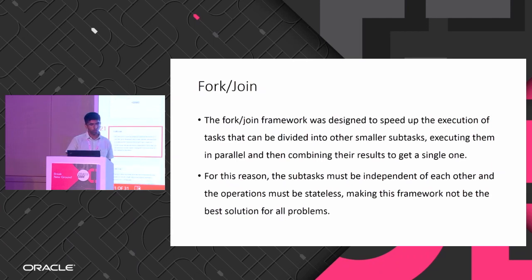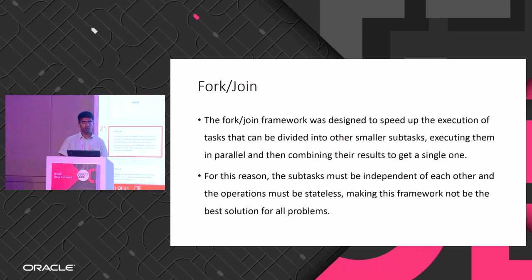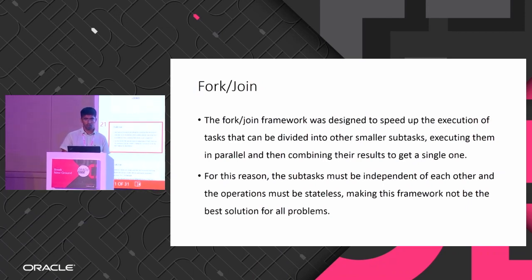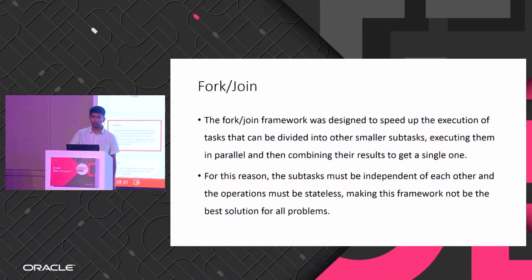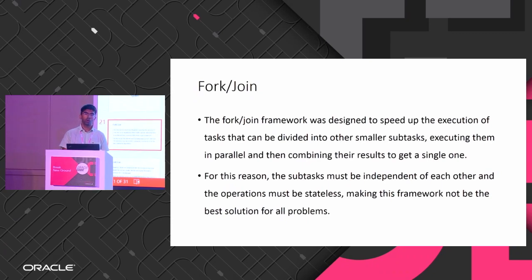Next I'll move to Fork/Join. Fork/Join was designed with the divide-and-conquer principle. It speeds up execution by dividing tasks into smaller chunks, executing them in parallel, obtaining the results, and combining them again. This is a recursive procedure. The subtasks should be independent of each other and also stateless, so that there is no data race.